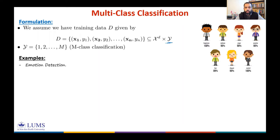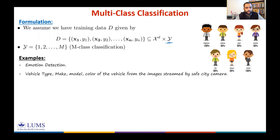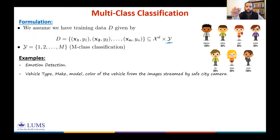Another example could be vehicle type, make, model, or color. You're getting a continuous stream from a camera mounted on a highway or road, and you want to detect whether there's a vehicle. After detection, you want to find the vehicle type, make, model, or color. These are all multi-class classification problems.